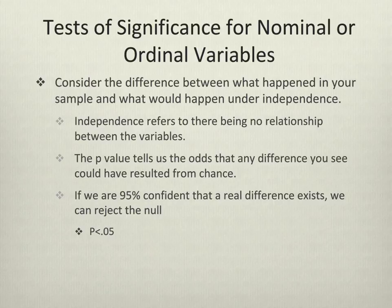First, you must establish a relationship before you begin investigating it in greater depth. Tests of significance work by comparing what happened in your sample versus what would have happened if those variables weren't related at all. Independence refers to there being no relationship between the variables. What would have happened if there were independence, and what actually happened in your sample? Is the difference large enough to warrant determining that it's statistically significant?